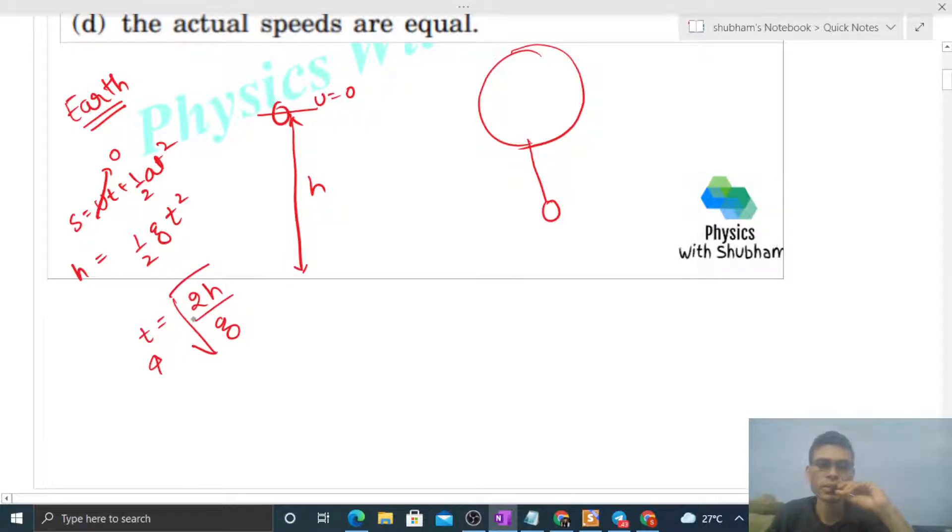Now, itne time mein yeh jo pendulum hai kitni baar oscillate karega? What is the time period of this pendulum? That will be 2π root of l by g. l is the length of this pendulum. Then ek oscillation mein yeh kitna time lagega, capital T. So small t time mein yeh kitna oscillation honge, let's say n number of oscillation honge. So small t will be n into capital T.